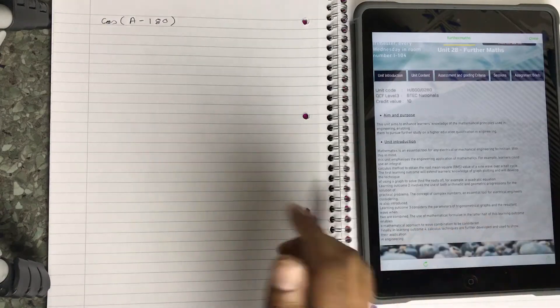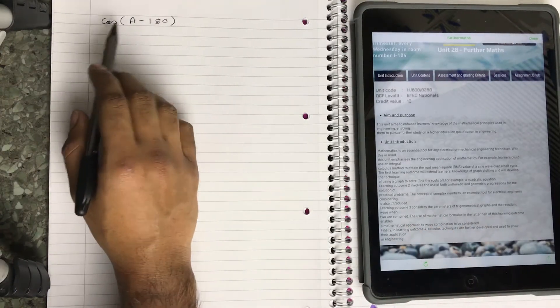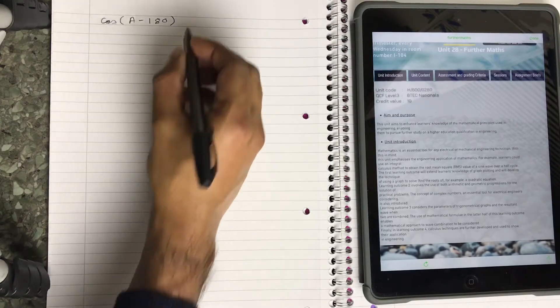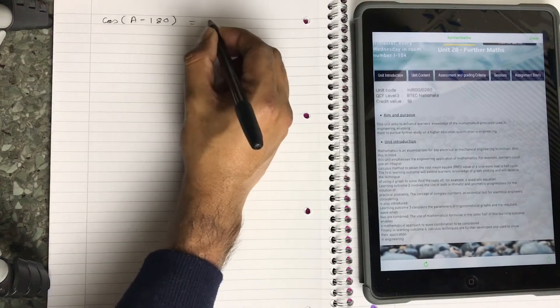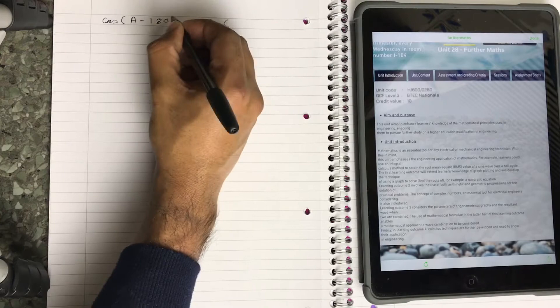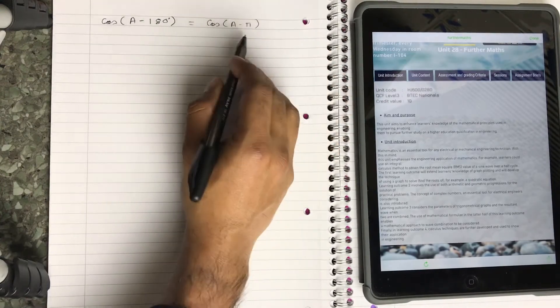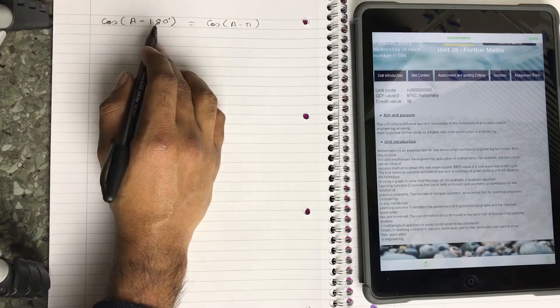Here's my given problem: cos(A - 180°). Now I can also write this as cos(A - π). It's one and the same - π is in radians, 180 is in degrees. So how do you solve this problem?